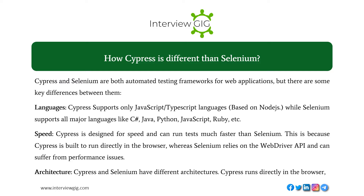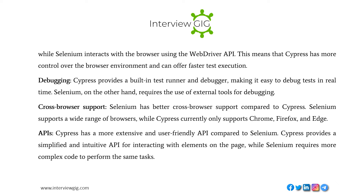Speed: Cypress is designed for speed and can run tests much faster than Selenium. This is because Cypress is built to run directly in the browser, whereas Selenium relies on the WebDriver API and can suffer from performance issues. Architecture: Cypress runs directly in the browser, while Selenium interacts via the WebDriver API, meaning Cypress has more control over the browser environment and can offer faster test execution.